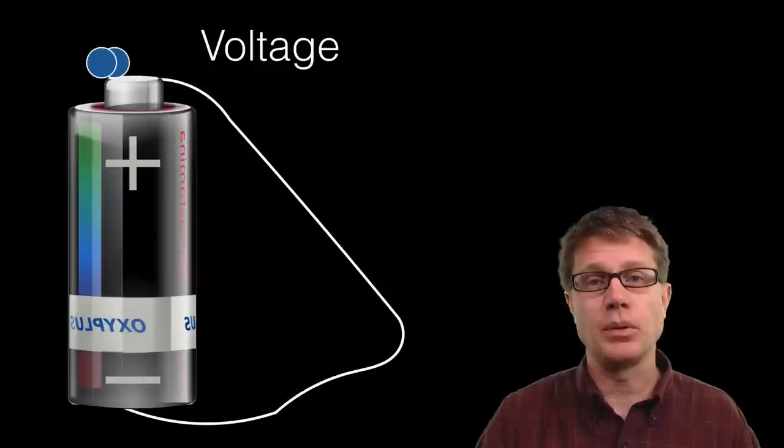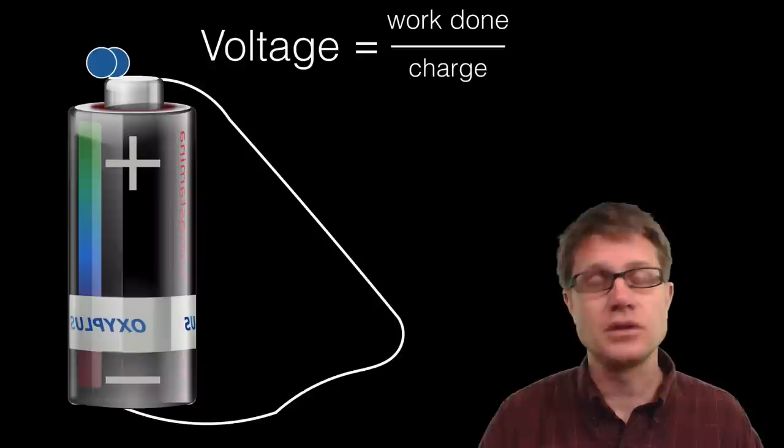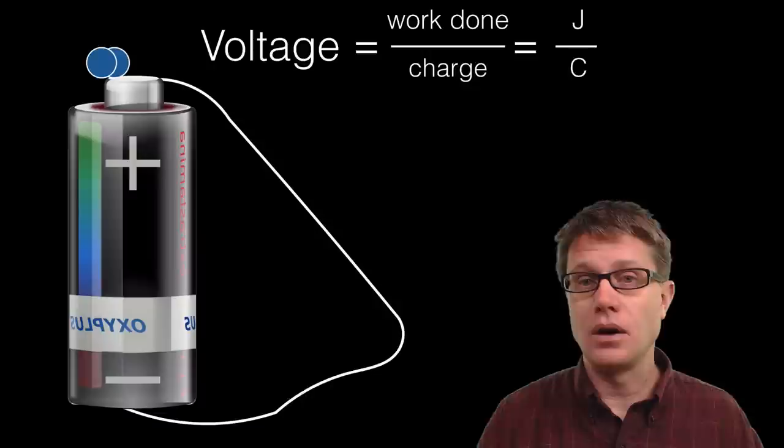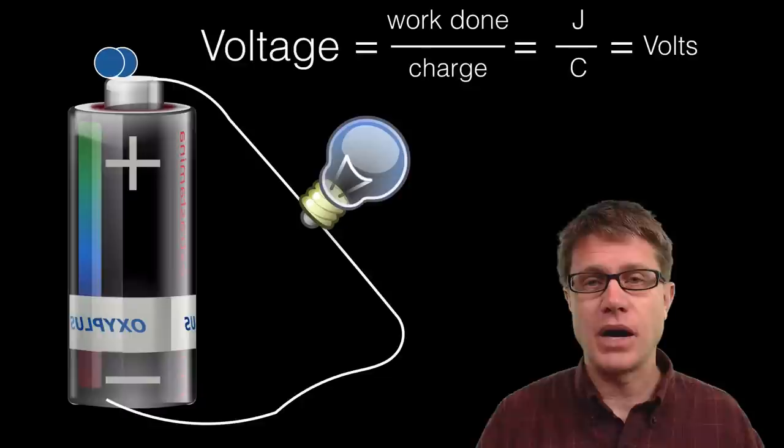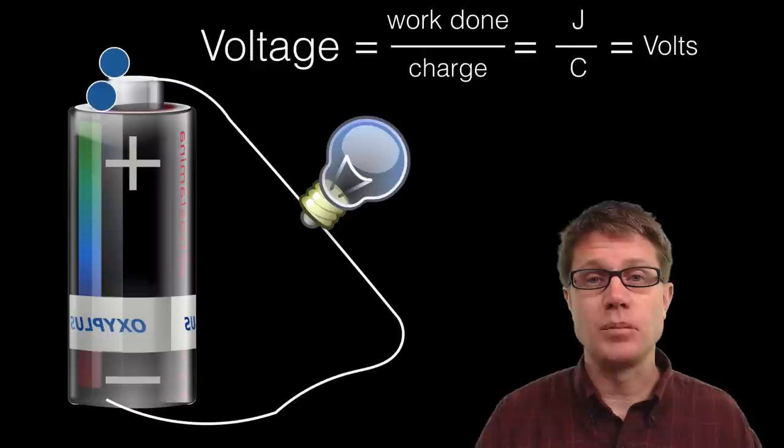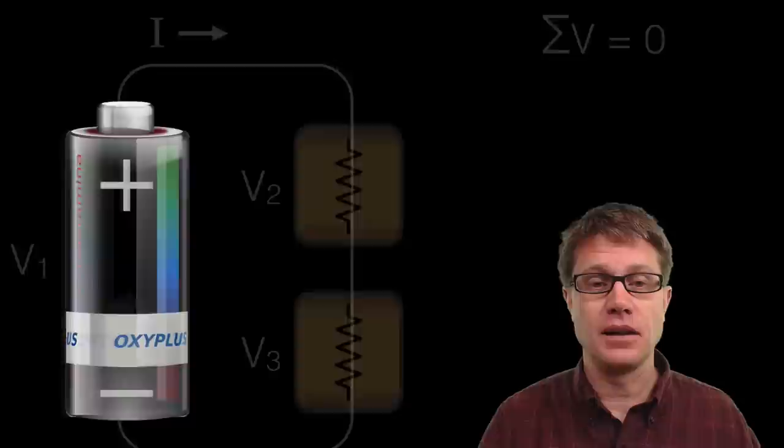Voltage is equal to the work done by the charge as they move. If we move one coulomb of charge we could do one joule of work — that is what a volt is. So if we put a light bulb in the circuit and it is a 1.5 volt battery, as that charge moves through it we are going to be able to generate 1.5 joules of heat and light coming out of that light bulb.